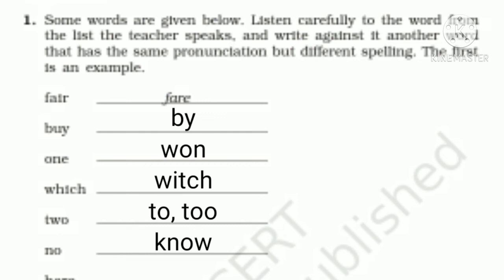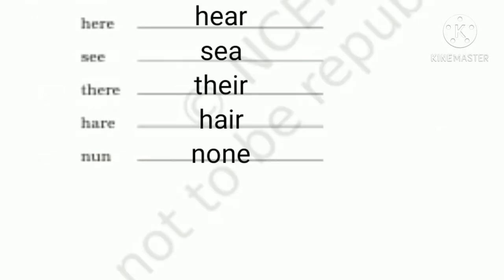More homophones: 'two' (T-W-O, the number 2), 'to' (T-O) and 'too' (T-O-O) — all correct. 'No' (N-O, negative) and 'know' (K-N-O-W, to be aware). 'Here' (H-E-R-E, this place) and 'hear' (H-E-A-R, to listen). 'See' (C-S-E-E) and 'sea' (S-E-A). 'There' (T-H-E-R-E) and 'their' (T-H-E-I-R). 'Hare' (H-A-R-E, a type of rabbit) and 'hair' (H-A-I-R). 'Nun' (N-U-N) and 'none' (N-O-N-E).